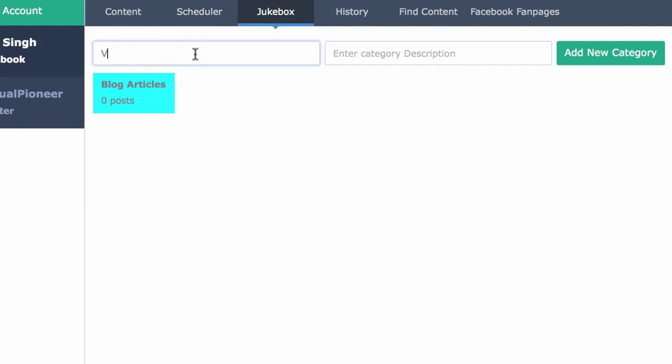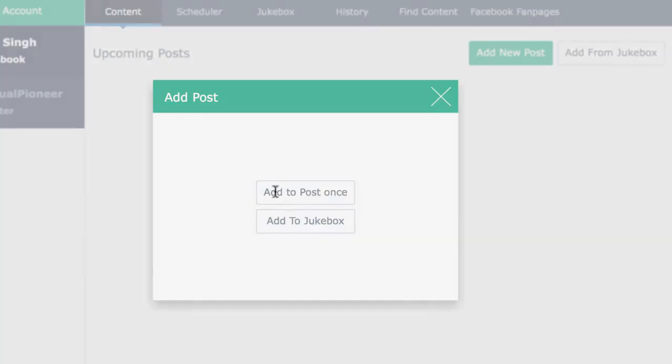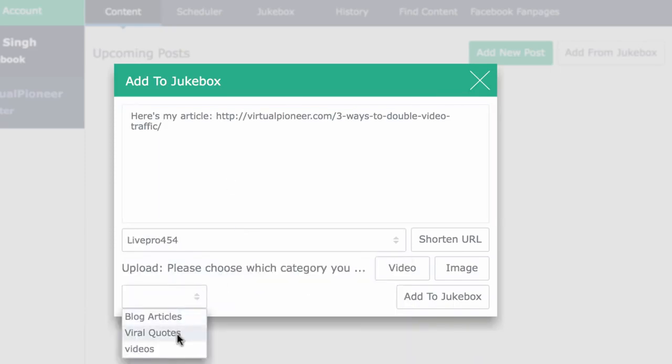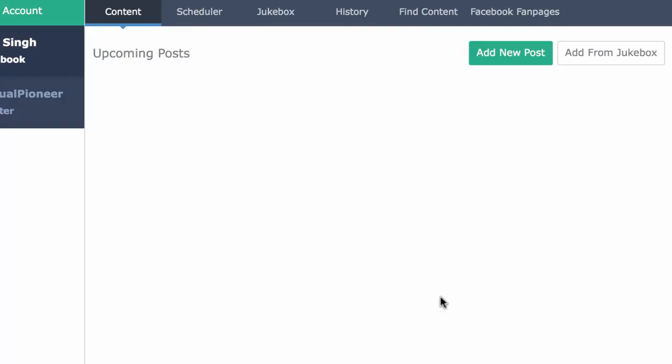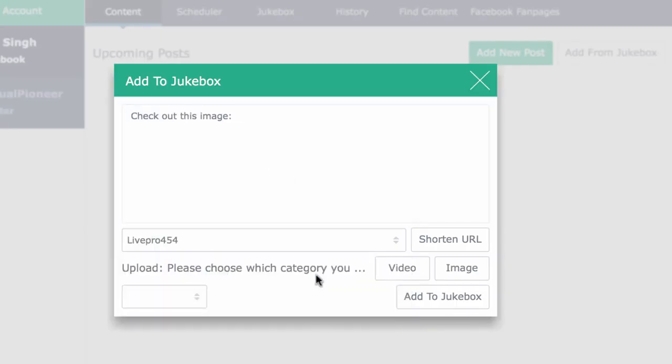So first to get started, create your jukeboxes or categories. For example, we can have a jukebox of only viral quote images that we want posted to Facebook on autopilot for us. And another could be a collection of just video content. And another could be just articles from our blog. Then you'll want to fill those jukeboxes with content. So let's add a new post and choose add to jukebox and create a Facebook or Twitter post about, let's say, an older blog article we want to share and then save this to our blog content jukebox. Then let's create another piece of content like a viral quote image but save that to our viral image jukebox.